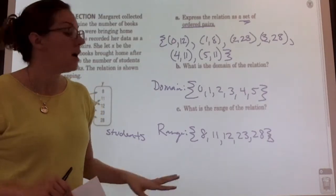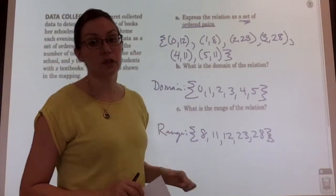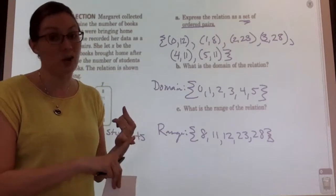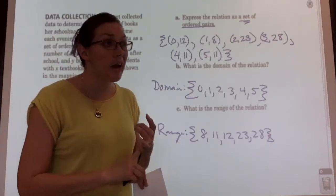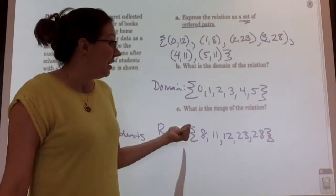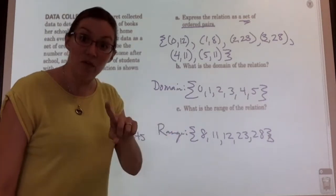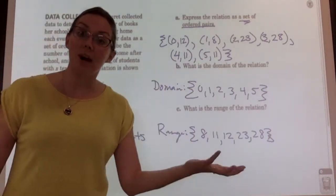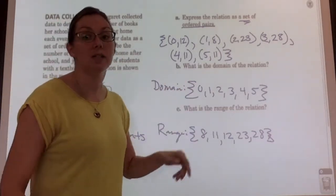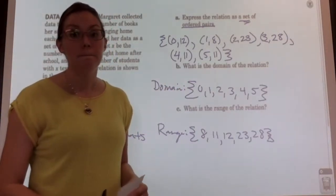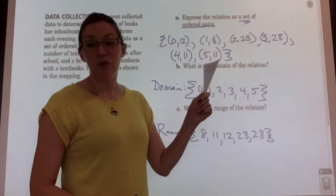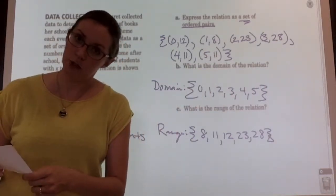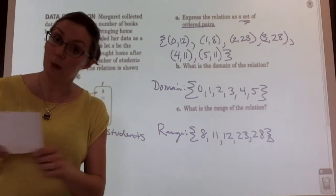That's a quick review of domain, range, and how to write a relation as a set of ordered pairs. These are important definitions — one of our standards is focused on determining whether things are or are not functions and how to write domain and range. Domain is our x's, written least to greatest with no repeats. You don't need to turn this in, but put it somewhere safe in your binder because you may want to use it to study.